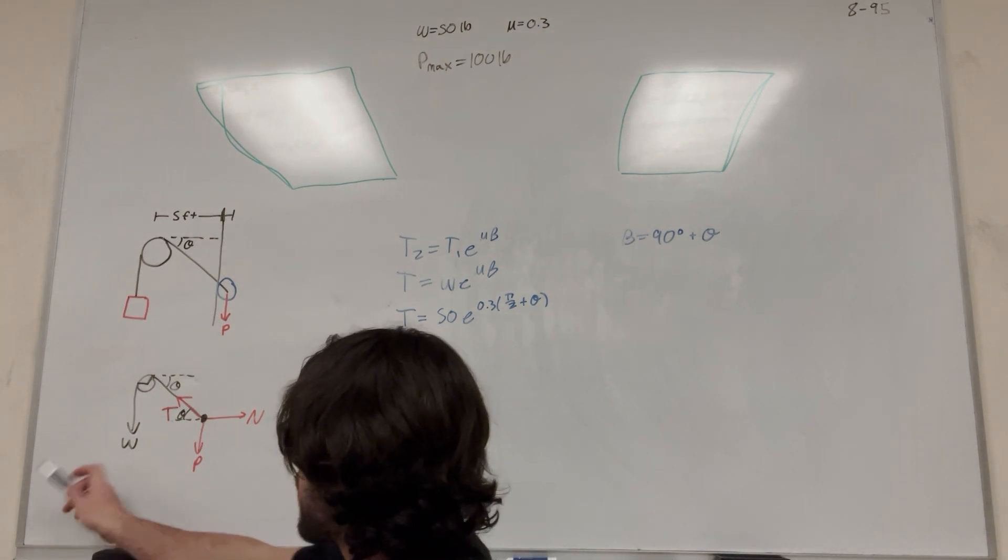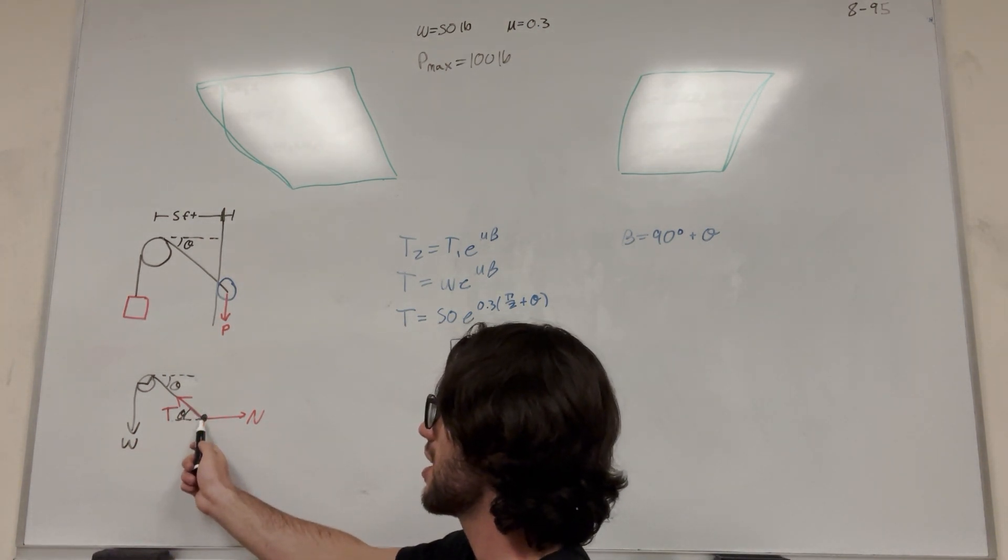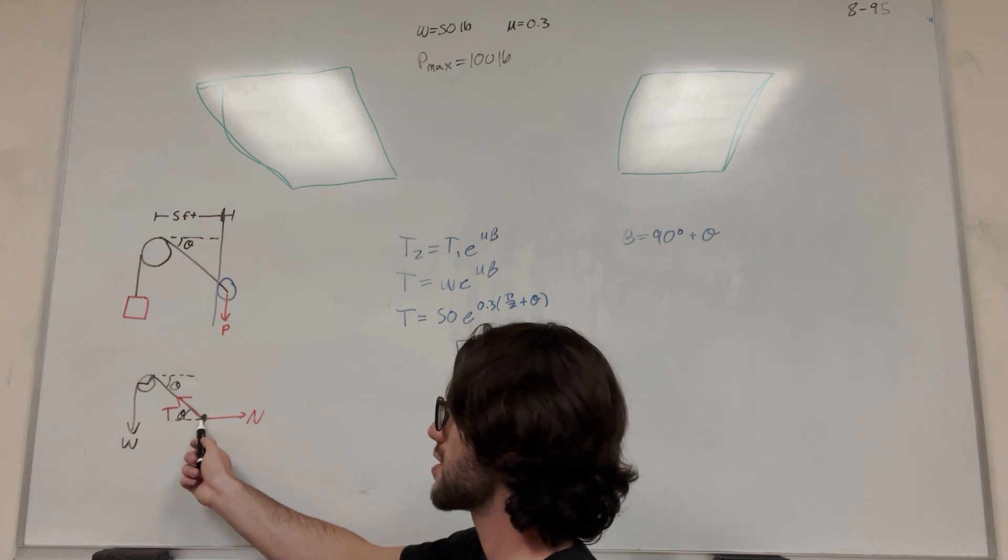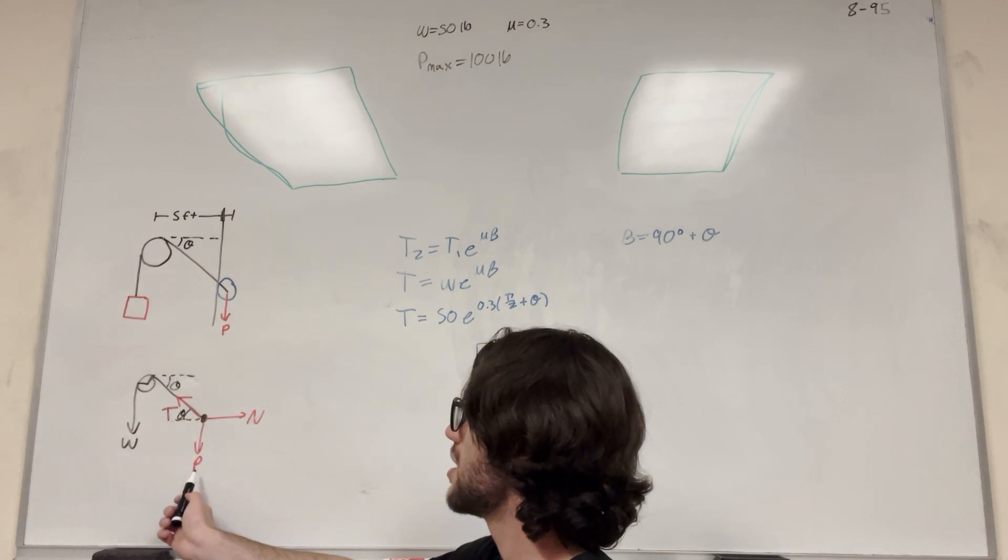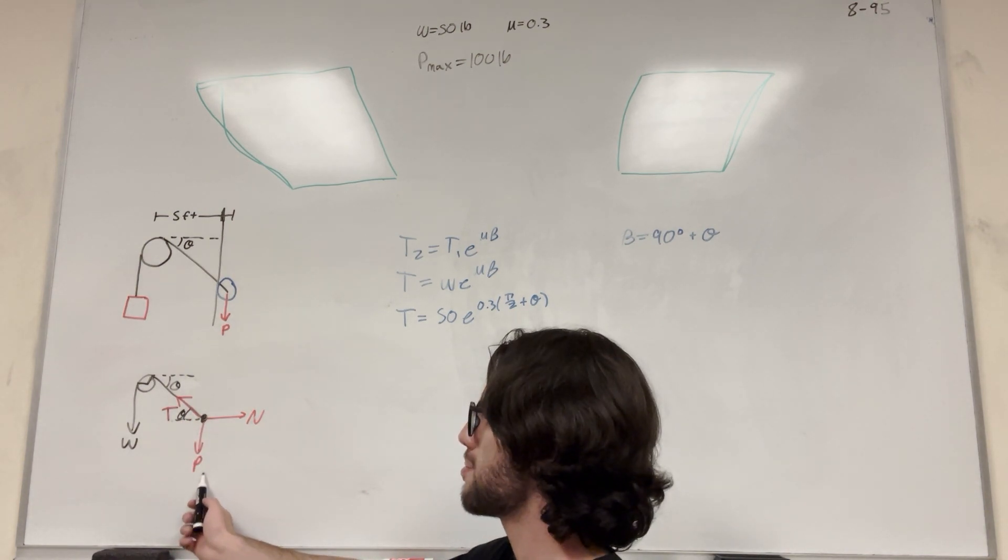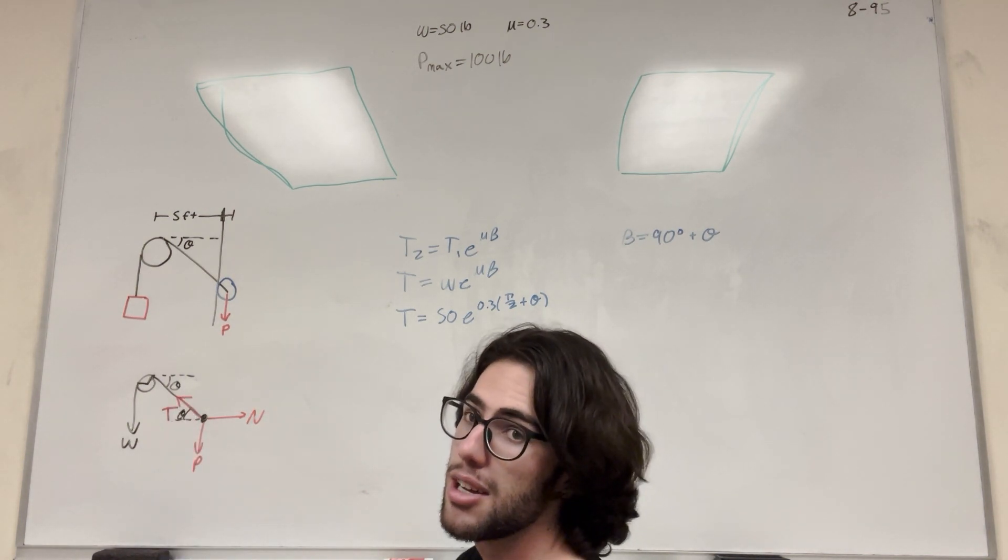So what's our next equation going to look like? Well, let's go ahead and draw a force body diagram here. So we did that already. So just starting at this point, this is our force body diagram. We know that whatever this tension is has to be related to this P, right? If this P is at its max, then this tension has to be related to that.